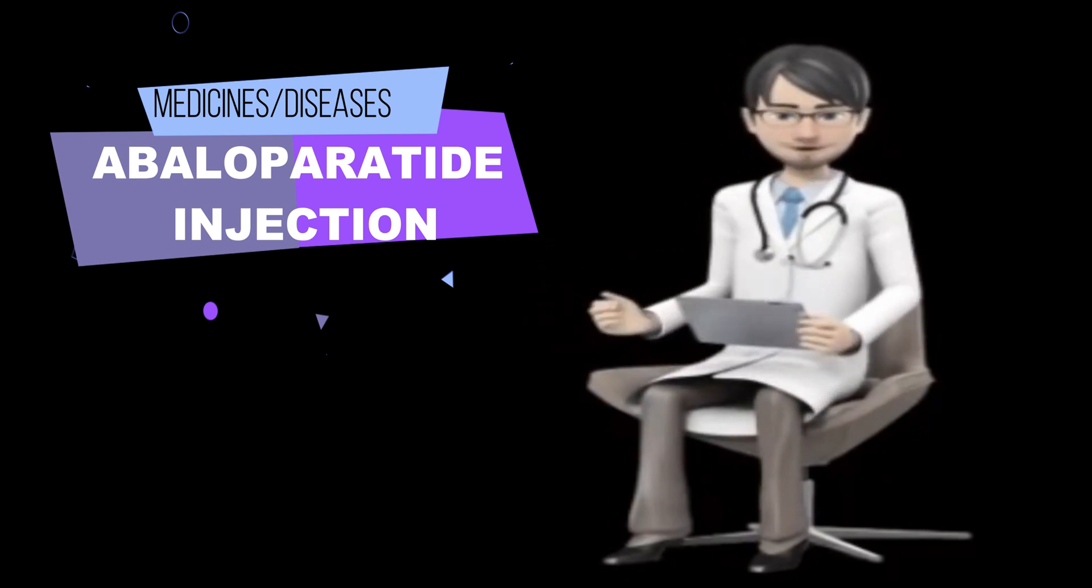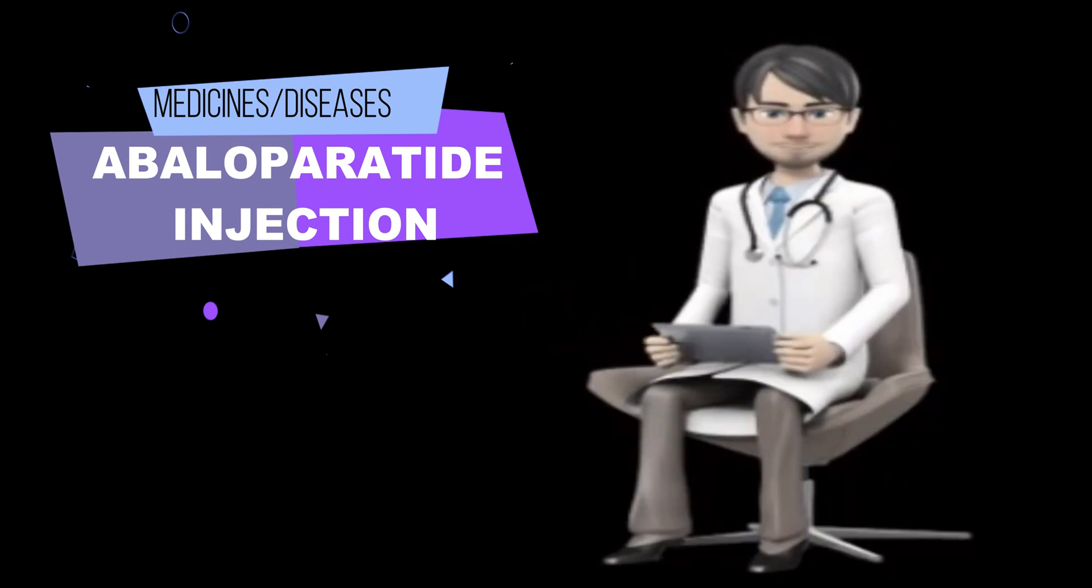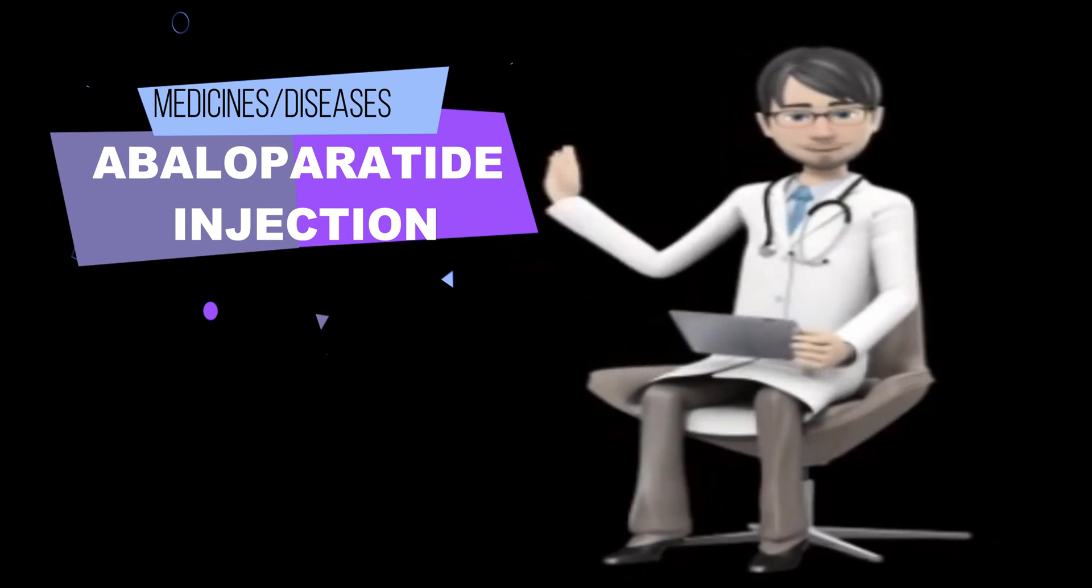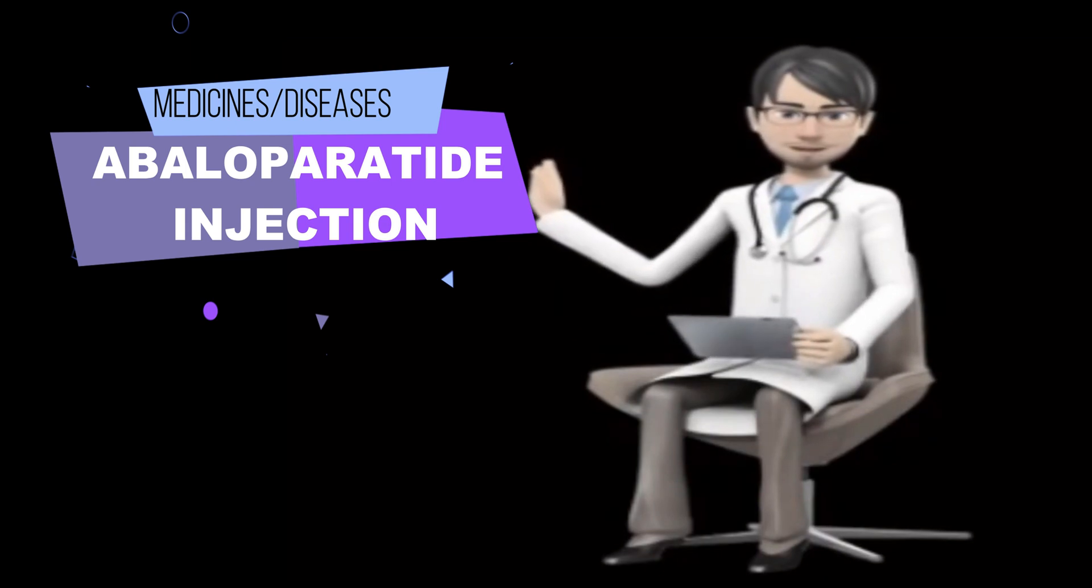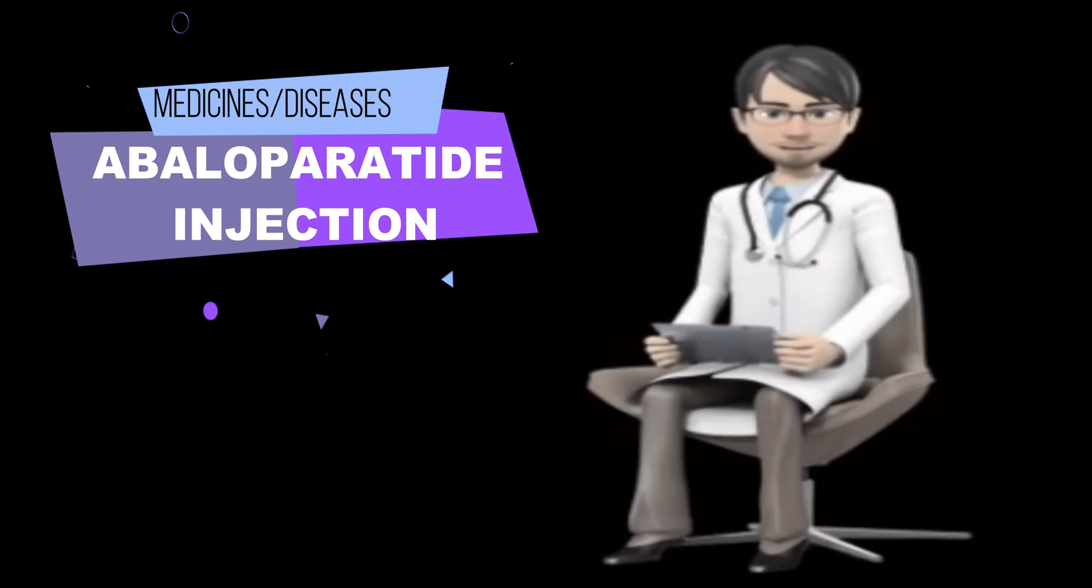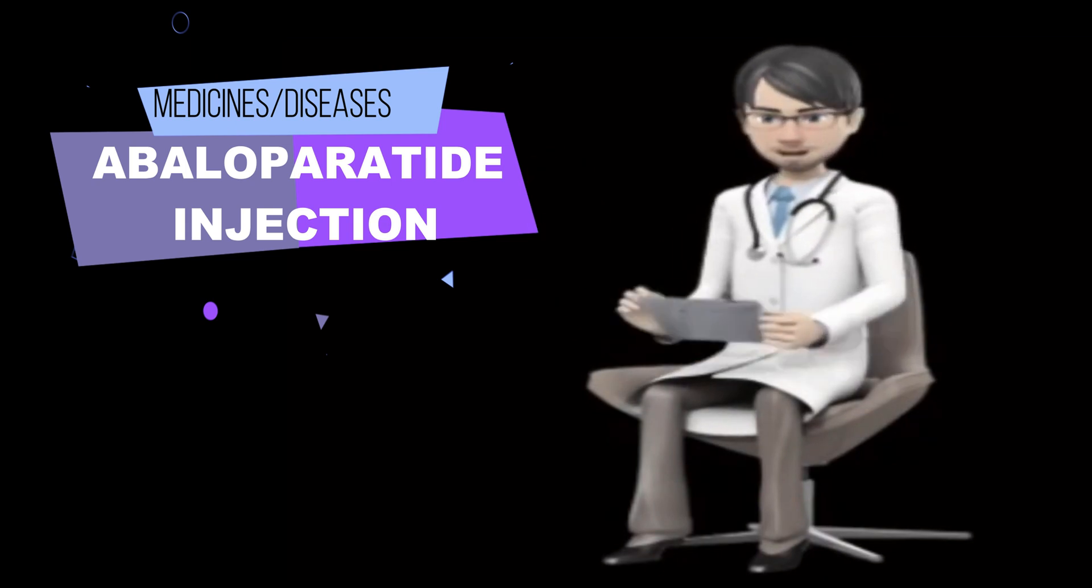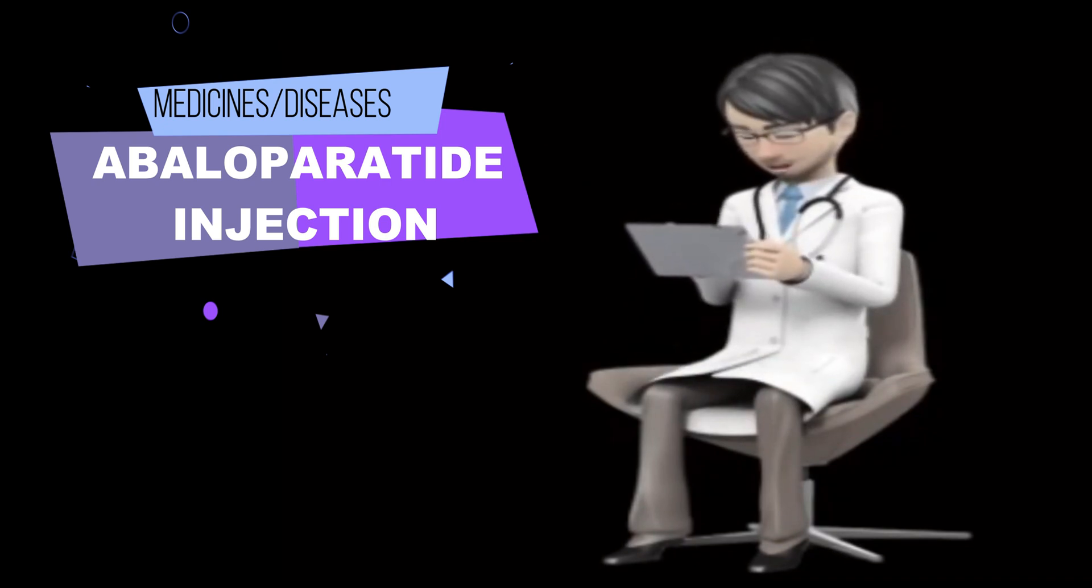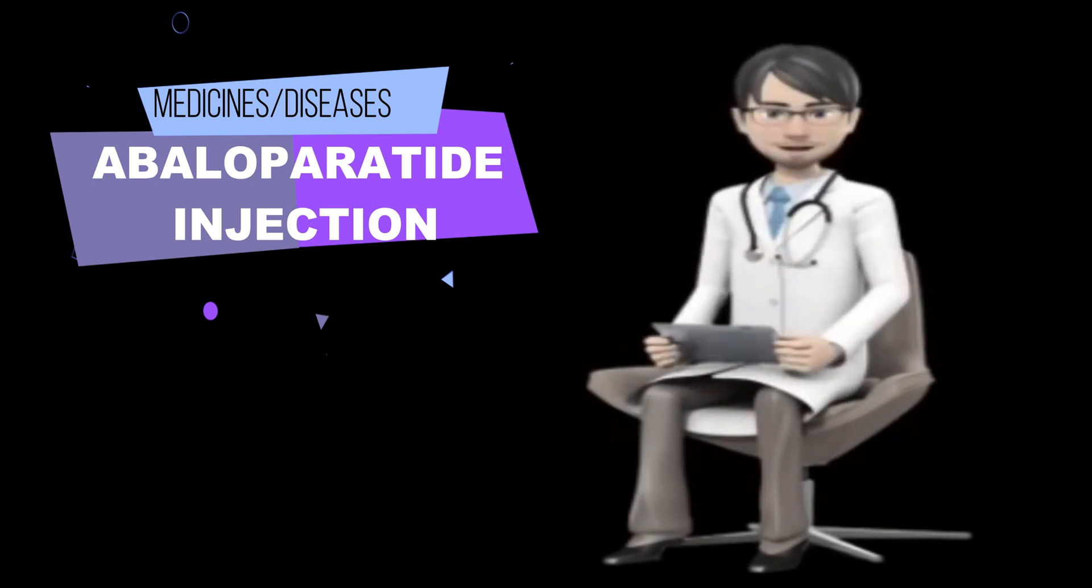You should inject abaloparatide injection into the lower stomach area. Avoid giving your injection within the 2-inch area around your belly button. Talk to your doctor about how to change your injection site for each injection. Do not give abaloparatide injection into your veins or muscles.